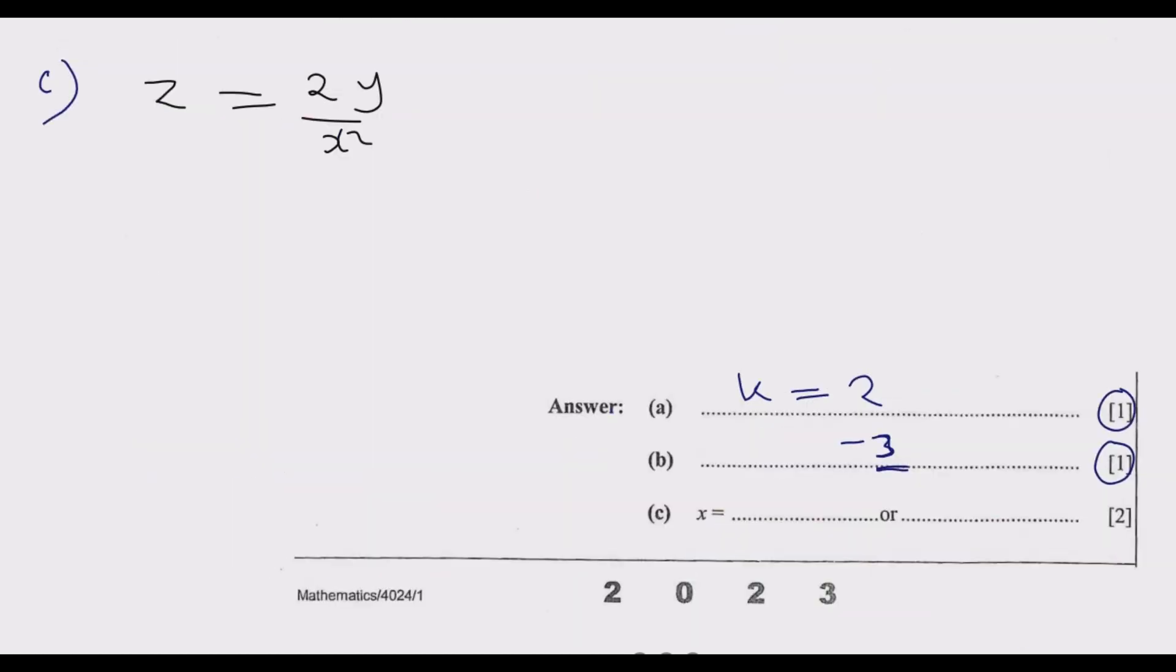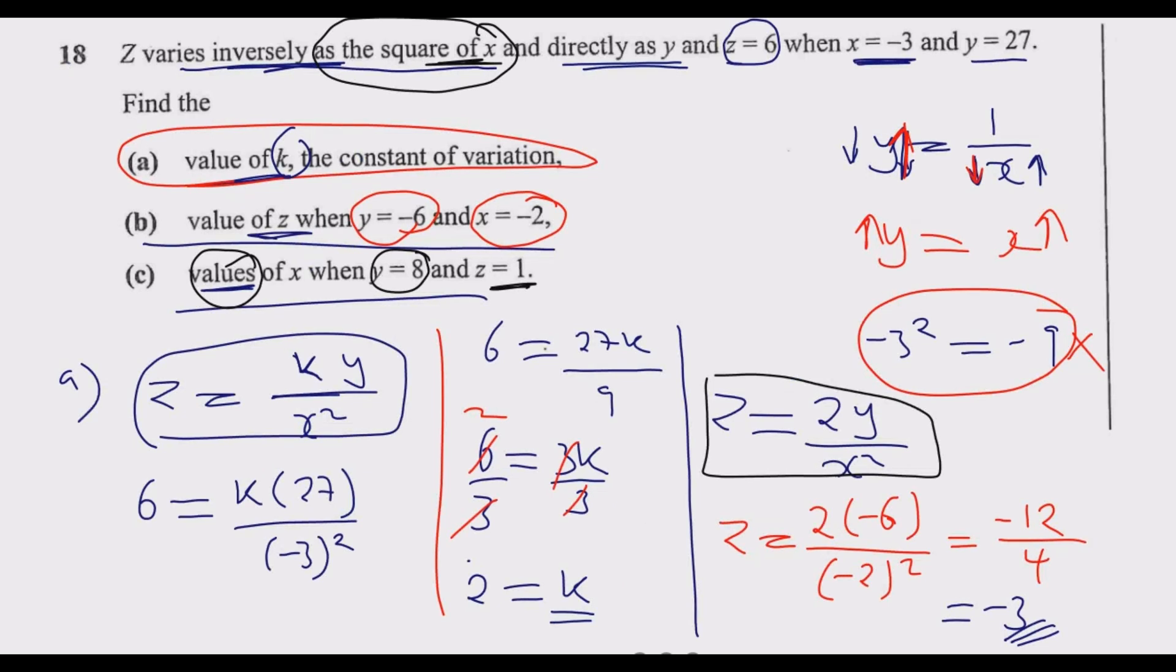We know y is 8 and z is 1, so z equals 2y over x squared. The value of z is 1 and y is 8. It's just a matter of substituting: 1 equals 2 times 8 over x squared.